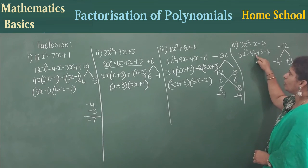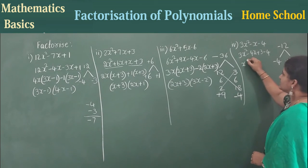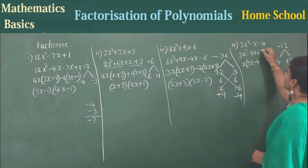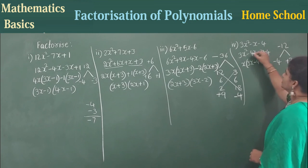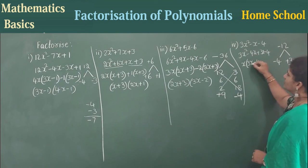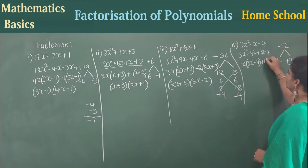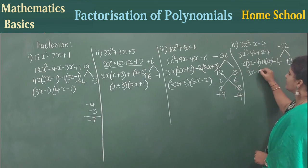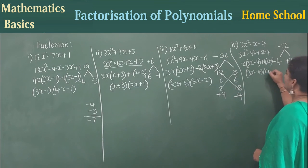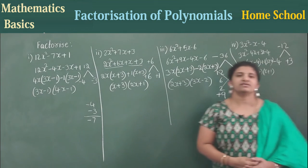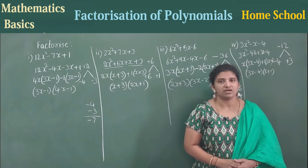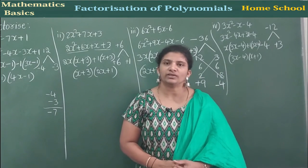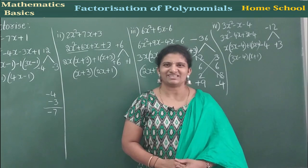In the first two terms, only x is common: x times (3x - 4). In the last two terms, 1 is common: 1 times (3x - 4). Now in both groups, 3x - 4 is common. We are left with x + 1. So the factors are (3x - 4)(x + 1). This is the way we factorize the polynomial. In our next session, we are going to continue with another mathematics basics. Thank you all.